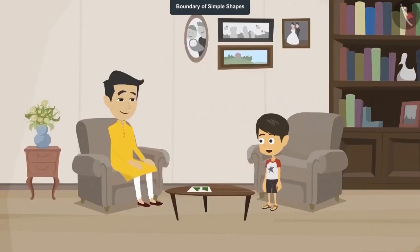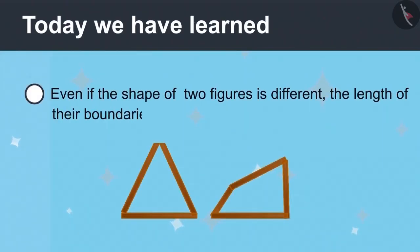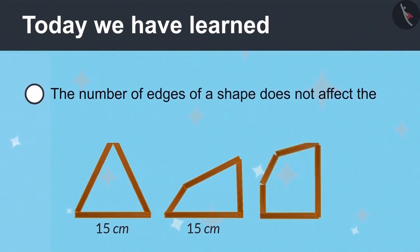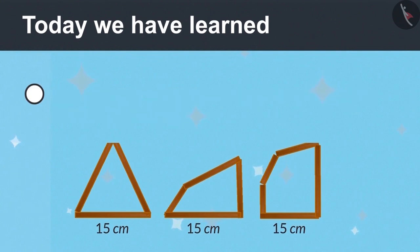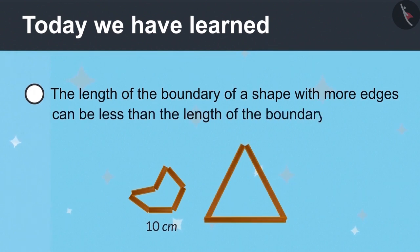Let's go to the market now and buy some wire for the farms. Today we have learned that even if the shape of two figures is different, the length of their boundaries can be the same. And the number of edges of a shape does not affect the length of its boundary. The length of the boundary of a shape with more edges can be less than the length of the boundary with the less edges.